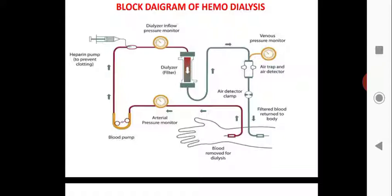From the dialyser filter, the dialyser absorbs waste through a semi-permeable membrane. This membrane allows only waste materials such as urea, sodium, and potassium from the blood to pass through; blood cells are fed to the venous pressure monitor. From the venous pressure monitor, an air trap and air detector remove any air from the pipe, and then the filtered blood is returned to the body. This block diagram of hemodialysis is frequently asked in examinations.